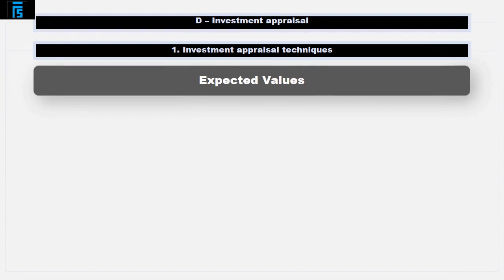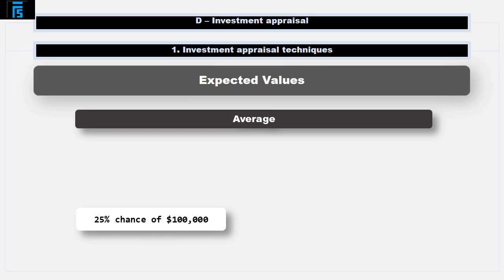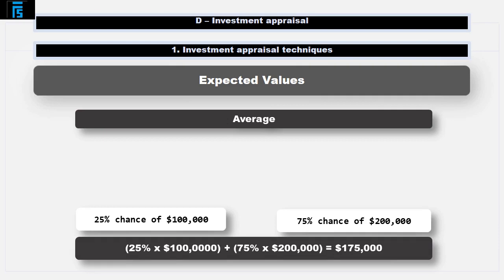There are several ways of dealing with risk and uncertainty in decision making. Let's first consider the use of expected values. An expected value is an average. Suppose we're not certain what revenue will be next year. We think there's a 25% chance that it will be $100,000 and a 75% chance that it will be $200,000. The expected value for revenue next year is calculated like this: 25% times $100,000 plus 75% times $200,000 equals $175,000.